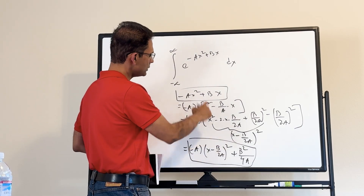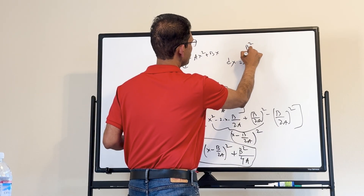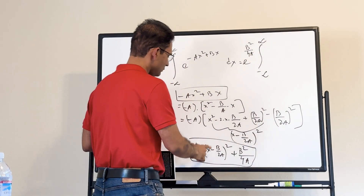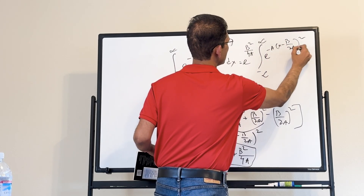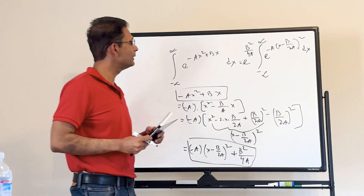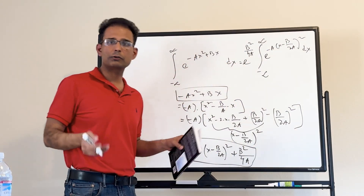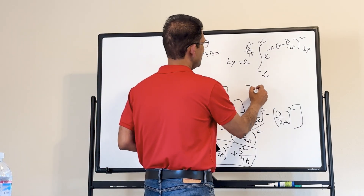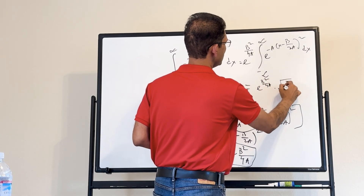Substituting this back into the integral, the constant term e to the b squared over 4a comes out, and we are left with the integral of e to the minus a times (x minus b/2a) squared dx. Carrying this out using our basic formula, the final result is e to the b squared over 4a times square root of pi over a.